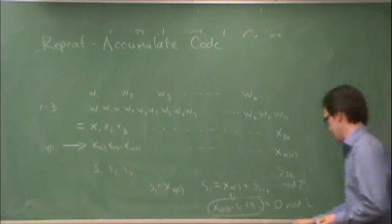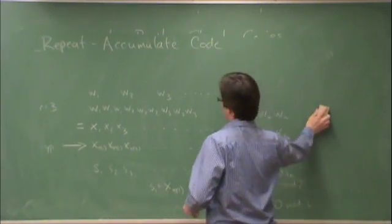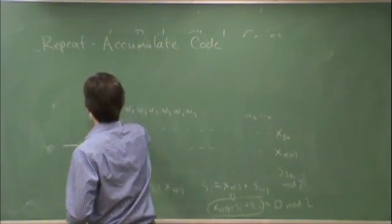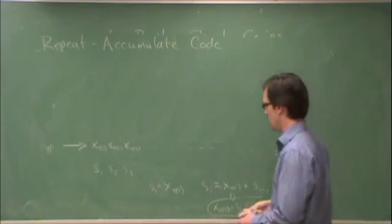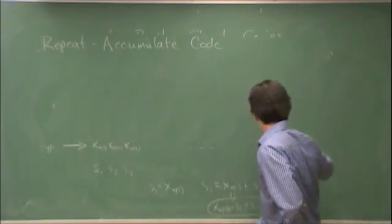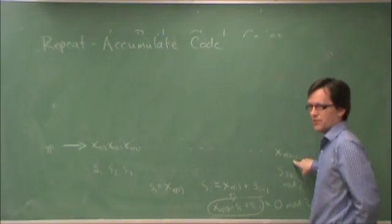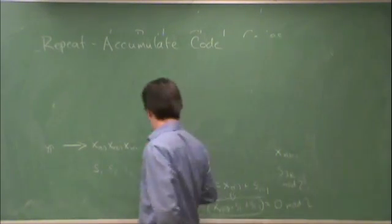So, the factor graph ends up looking like this. So, remember that these x's are just names for w's.